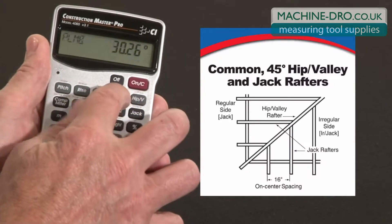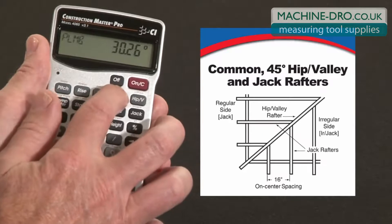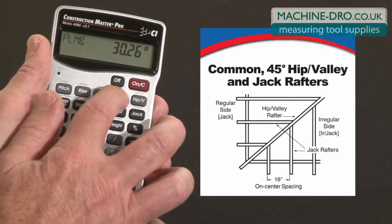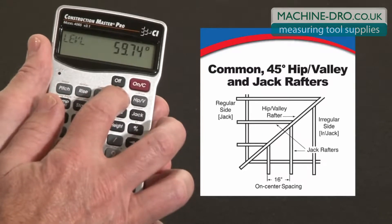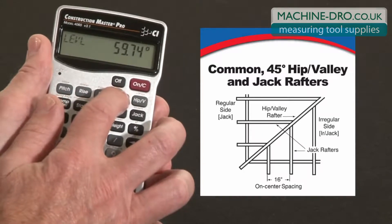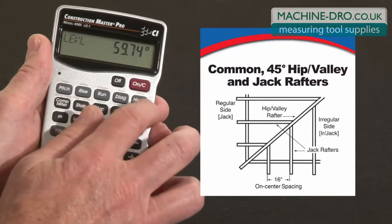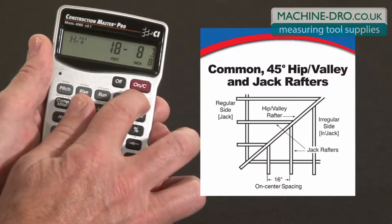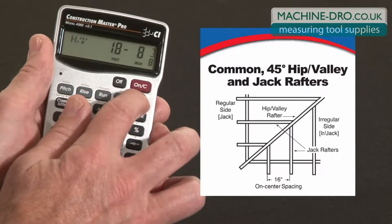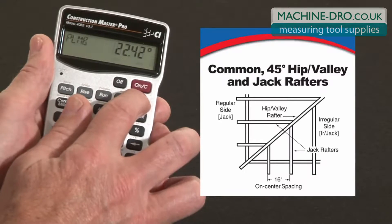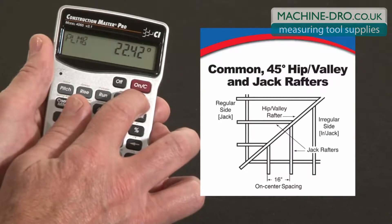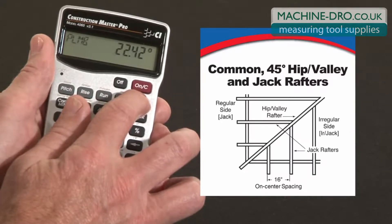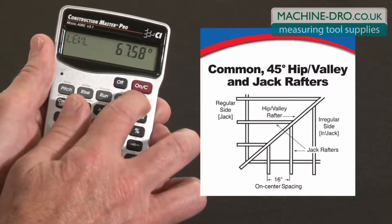If I press that again, it'll give me the common rafter length plumb cut angle and the level cut angle. Now if there's a forty-five degree hip or valley coming off of here, I can press that. That would be eighteen foot eight and seven-eighths. It'll give me the cut angles for the hip or valley rafter as well.